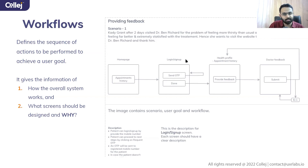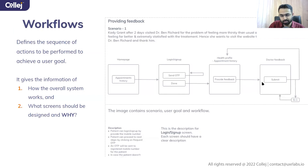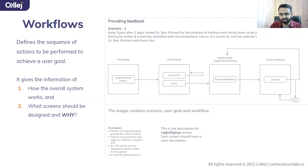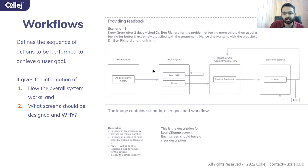So she does that. And in history, she clicks on the action: 'I want to provide feedback to the doctor.' She goes to that, writes her feedback, and submits it — as simple as that. So there are four different stages, in which there are specific actions in between. In homepage, viewing appointment history is one action she performs to get to the next phase, which is login.